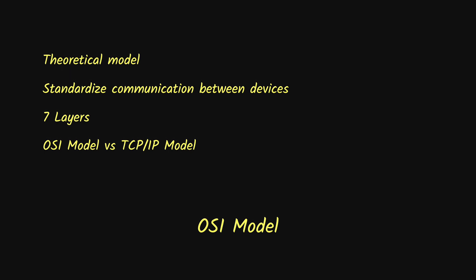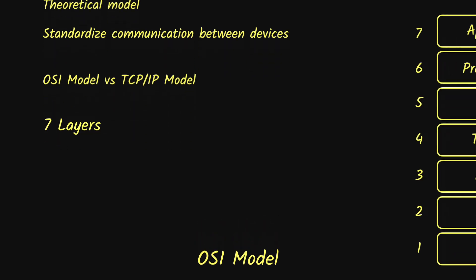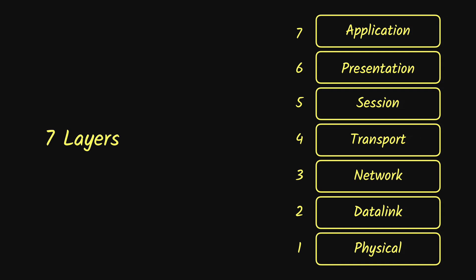There is also a TCP/IP model which is a four-layer model instead of seven, and I will make a future video discussing in detail what the TCP/IP model is and what the different layers and protocols involved are. For now let's focus on the seven layers of the OSI model.